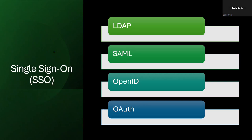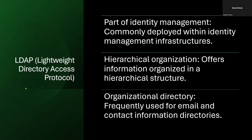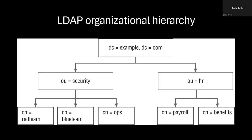The single sign-on technologies we'll look at include LDAP, SAML, OpenID, and OAuth. LDAP — Lightweight Directory Access Protocol — is a protocol used for identity management. One of the key benefits is that it offers a hierarchical structure, commonly used in Windows or Linux environments. For example, we could have an HR directory with subcategories for payroll and benefits, and a security directory with its own subdirectories. This illustrates the hierarchical structure we have with LDAP.